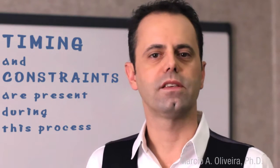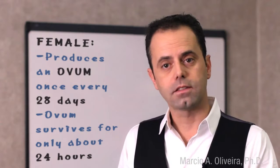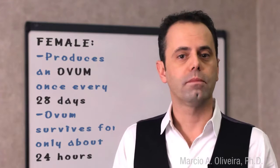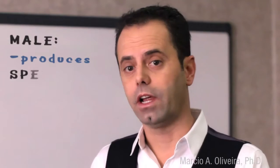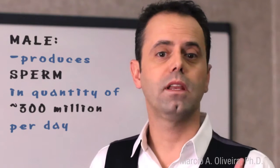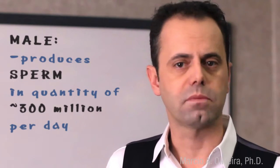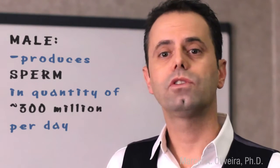It is very interesting to note that timing and constraints are present during this process. A female produces an ovum only every 28 days, and an ovum survives for only about 24 hours — this is the first constraint. On the other hand, a male produces sperm in a quantity of approximately 300 million per day, a total amount that could eventually fertilize almost all women in the U.S. if you needed a proportion of one to one.